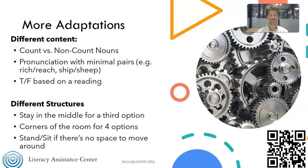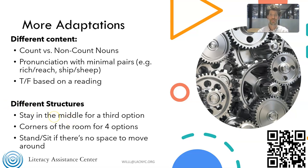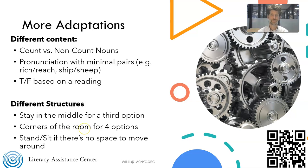If you change the structure of the activity a little bit, here are some examples. You can have students stay in the middle for a third option — not just yes or no, but 'it depends.' For multiple choice like A, B, C: A could be one side, B in the middle, and C on the other side. You can also expand it to the corners of the room if you want four options — I've seen that used in GED classes for debates where there's more nuance to the topic. And if there's no space in your classroom to move around much, you can have students stand and sit to indicate their answer, and there's still some movement in that.